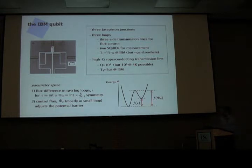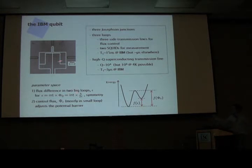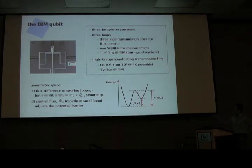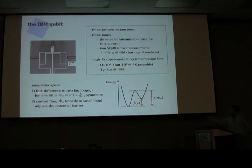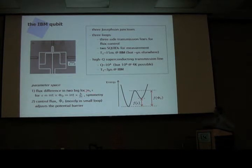To understand how this qubit works, there are two important parameters. One is the bias epsilon — it's supposed to be a small number corresponding to the flux difference between the two big loops. Because the loops are superconducting, the flux through the loop must be quantized, denoted phi-naught. If the bias is an integer multiple of phi-naught, the energy levels of the qubit have a symmetry.